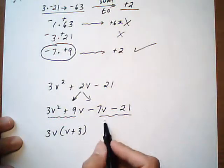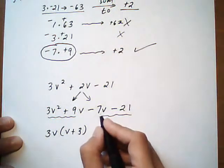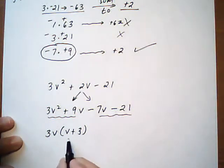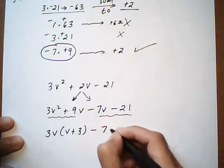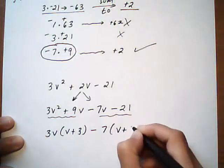Pull out a common factor on the next one, which would be a 7. And we want to pull out the minus sign, so that our left over binomial is plus plus. Left over V plus 3.